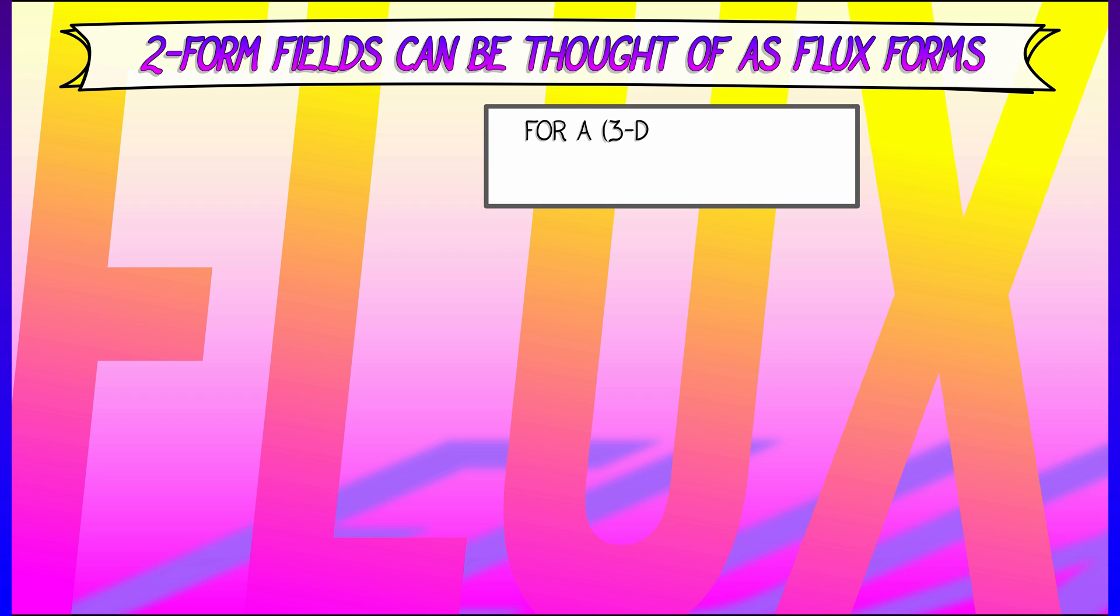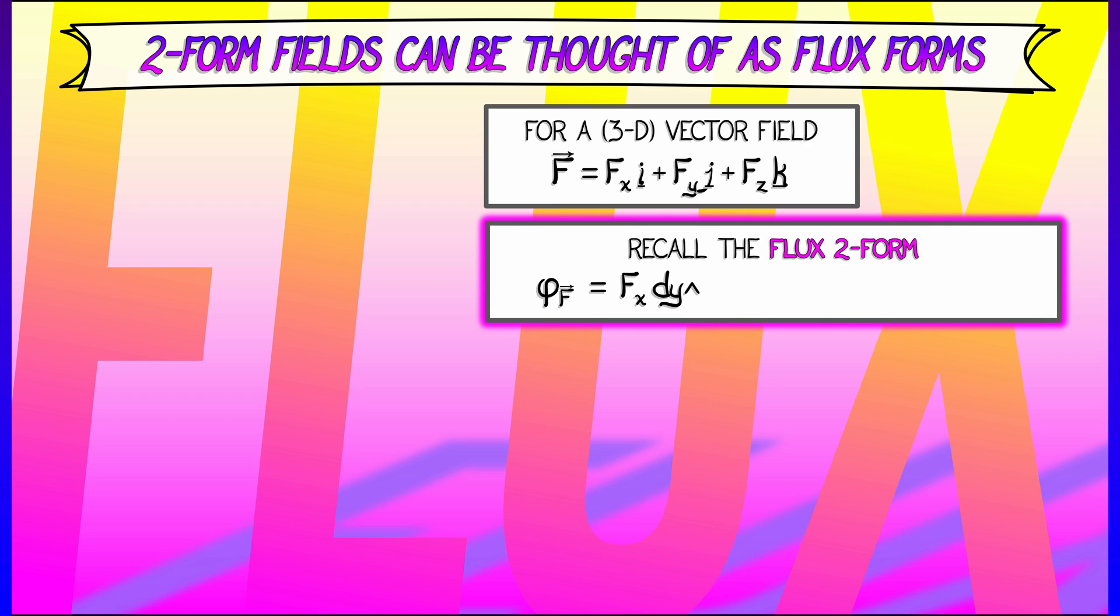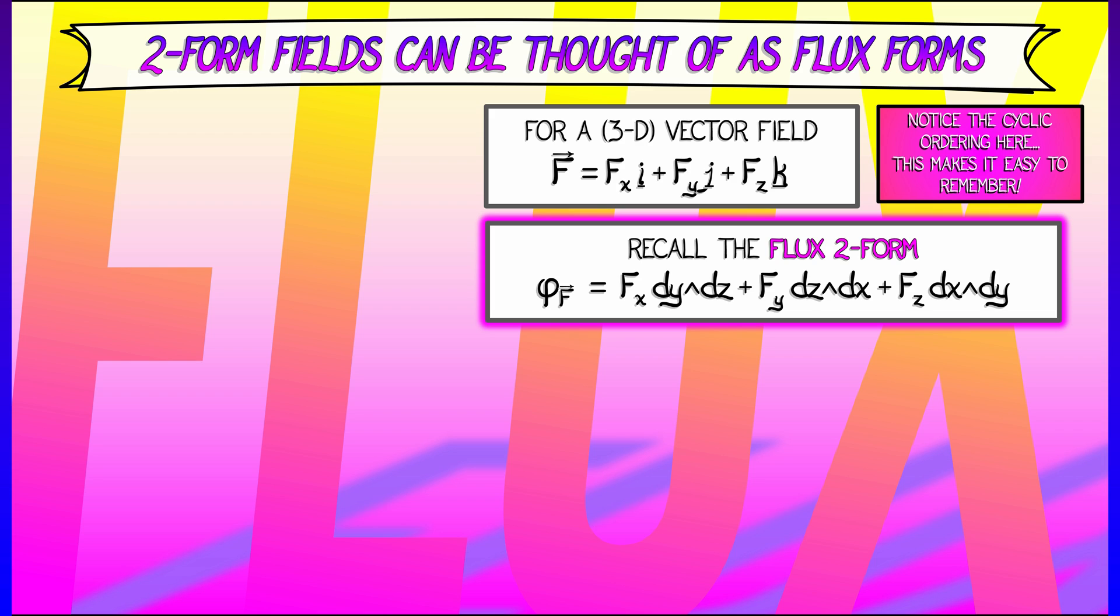If you have a 3D vector field F that is of the form F_x i + F_y j + F_z k, then the associated flux 2-form, phi sub F, is given by F_x dy∧dz + F_y dz∧dx + F_z dx∧dy. Now notice the nice symmetry, the cyclic ordering here. This makes it really easy to remember the relationship between a vector field and its dual flux 2-form.